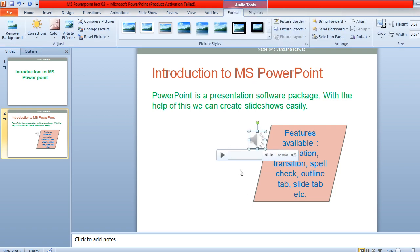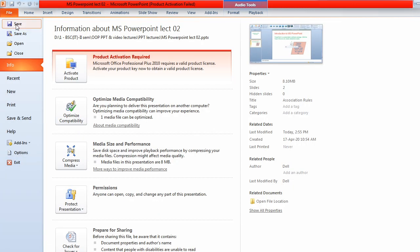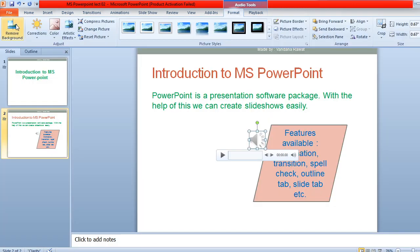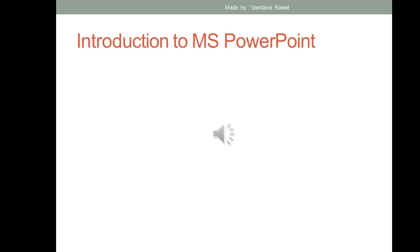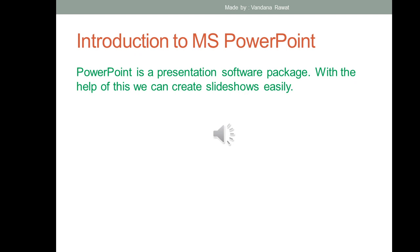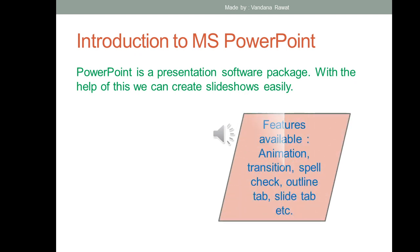Save the file by pressing Ctrl+S or go to File menu and click Save. When you start your slideshow with the F5 button, the audio icon will appear on that slide. To play the audio, simply click on the audio icon and it will get played.